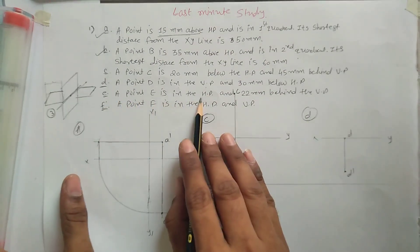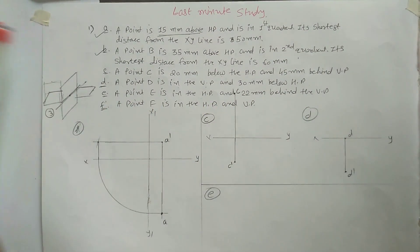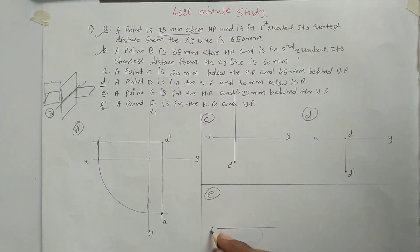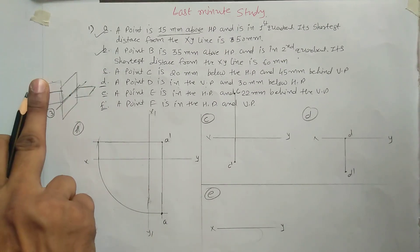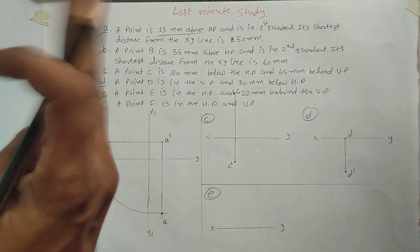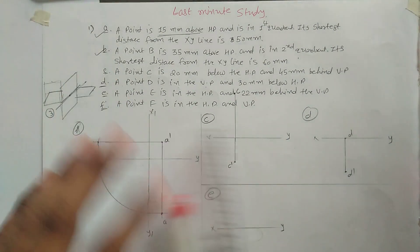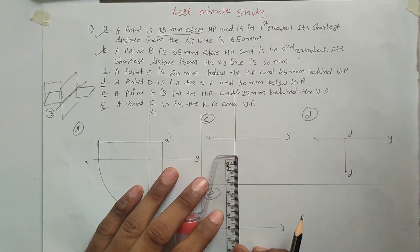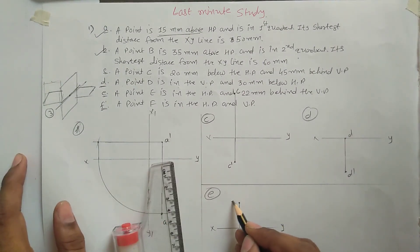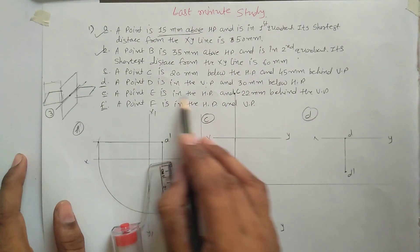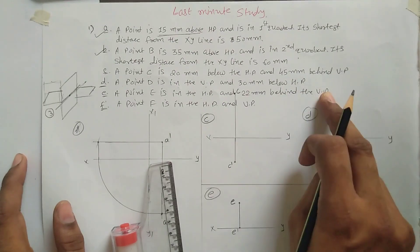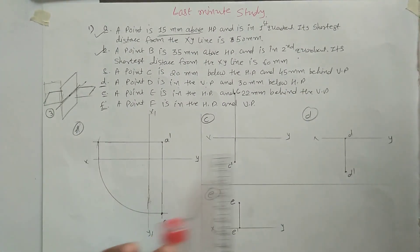Point E is in the HP and 22mm behind VP. Behind VP means the top view will be above the XY line, so measure 22mm above. Since point E is in the HP, the front view is on the XY line, and 22mm behind VP places the top view above the XY line.